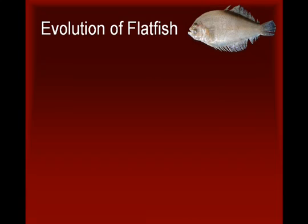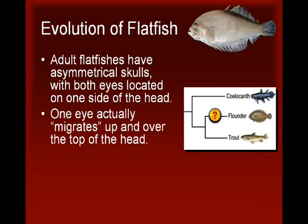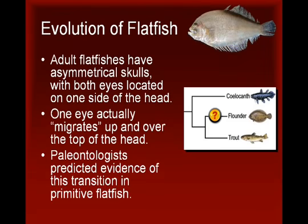A fifth example involves the evolution of flatfish, the group of fish that includes flounder, plaice, and halibut. All adult flatfishes have asymmetrical skulls, with both eyes located on one side of the head. This unique arrangement arises early in the life of every flatfish, when the symmetrical larva undergoes a metamorphosis to produce an asymmetrical juvenile flatfish. During this process, one eye actually migrates up and over the top of the head before coming to rest in the adult position on the opposite side. Paleontologists predicted evidence of this transition should be found in fossils of primitive flatfish.